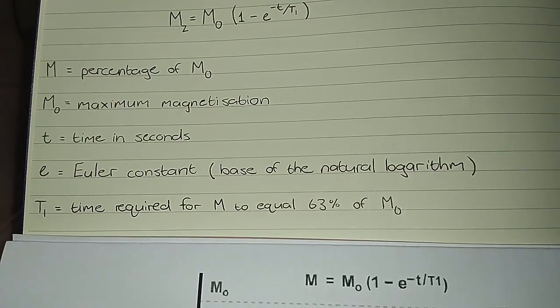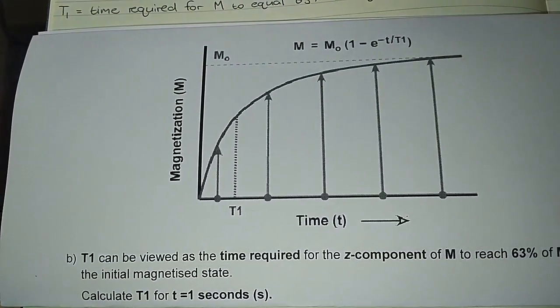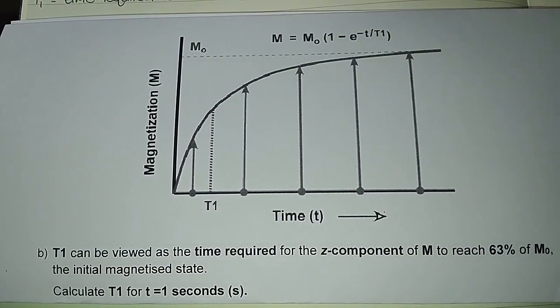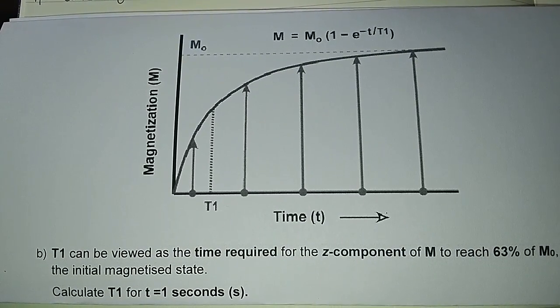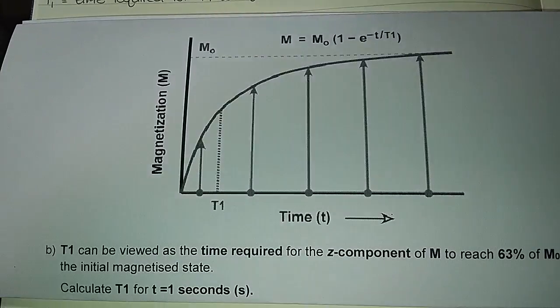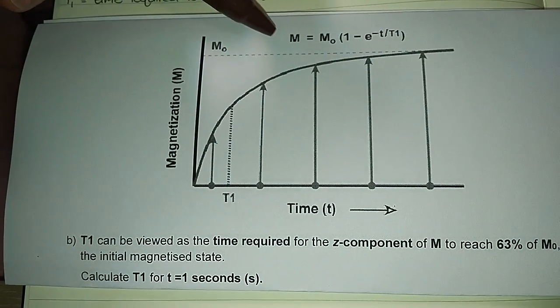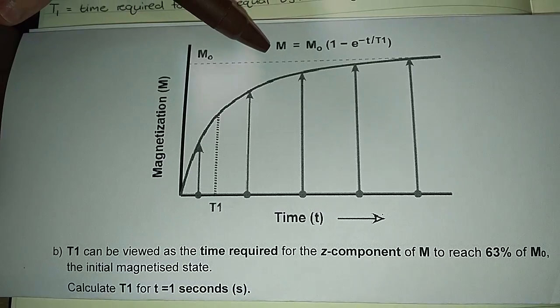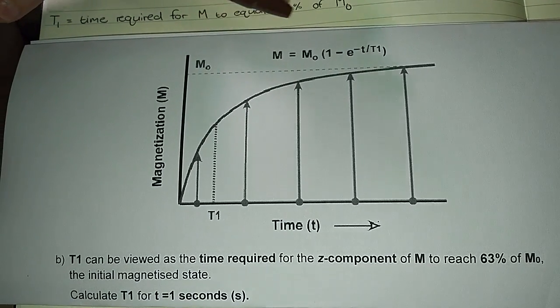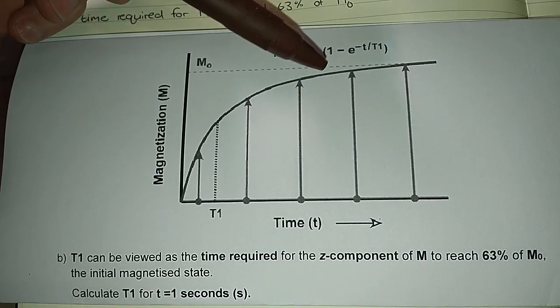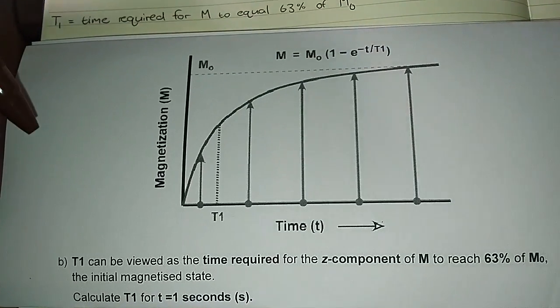So if we look at the question, this is what we were all given. And what you basically need to take from this is that our value of M, so this value over here, is going to be 63 percent, and it's going to be 63 percent of this value, which would then be the full value or 100 percent.